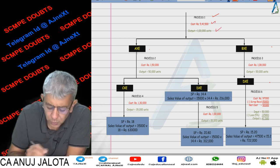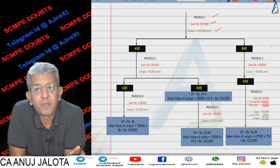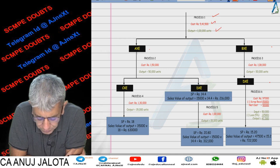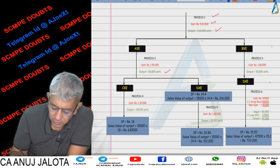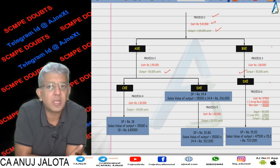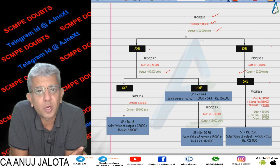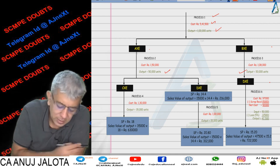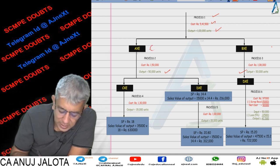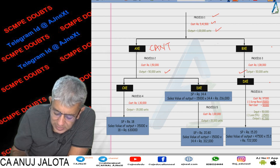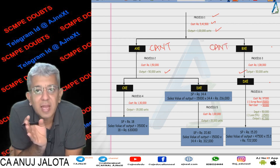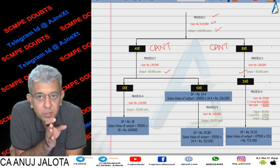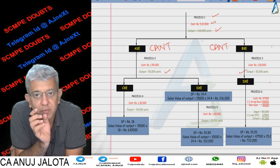Process 1 gives an output of 1 lakh units. This output comes out in the ratio of 1:1, so 50,000 and 50,000 of two products — AXC and BXC. AXC cannot be sold at this stage; BXC cannot be sold at this stage either. AXC will have to be taken to Process 2, which costs 1 lakh 50,000.